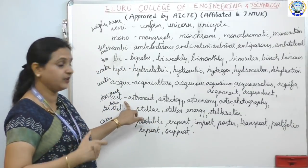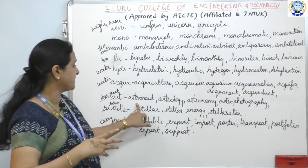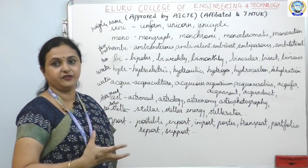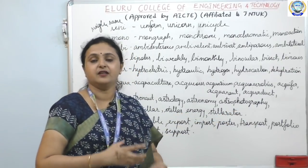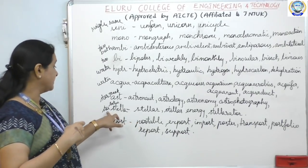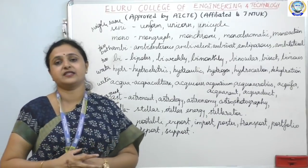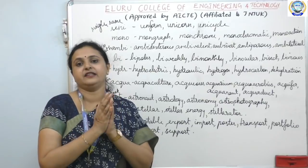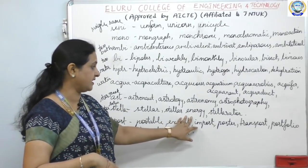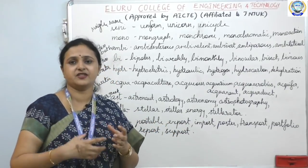Ast means star and is of Greek origin. Astronaut — a person who moves in space. Astrology — the study of stars. Astronomy — going out to find about space. Astrophotography — taking photos of space. Stellar is the Latin root for star. A stellar performance means an outstanding one. Stellar energy is energy from the star.